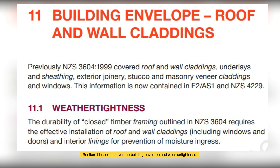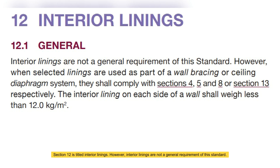Section 11 used to cover the building envelope and weather tightness. This information is now covered in building code A2-AS1. Section 12 is titled interior linings; however, interior linings are not a general requirement of this standard, unless the selected linings are used as part of a wall bracing or ceiling diaphragm system.